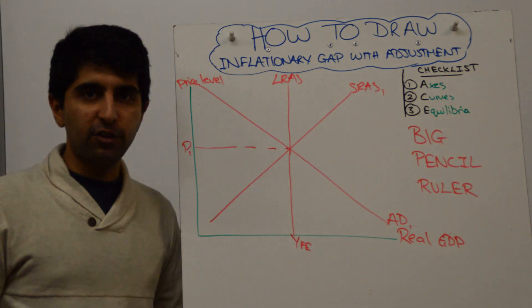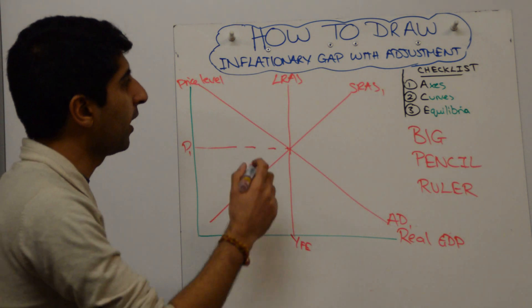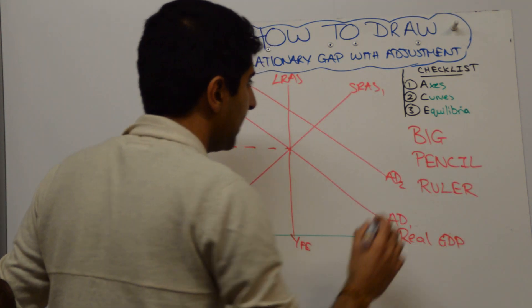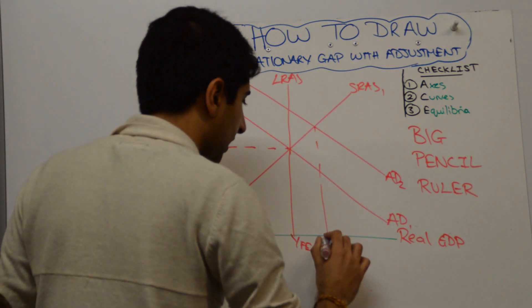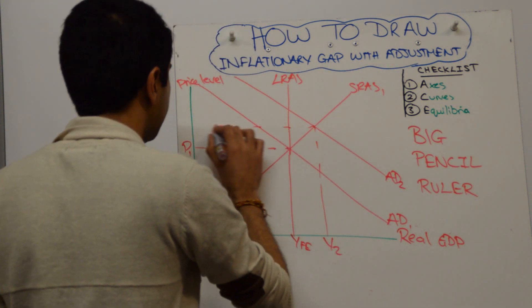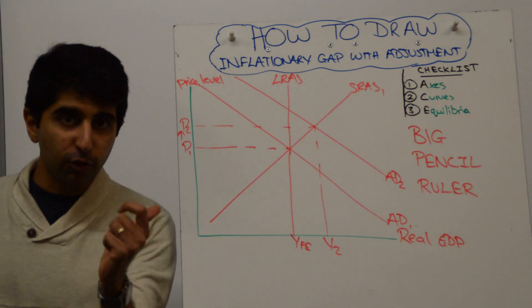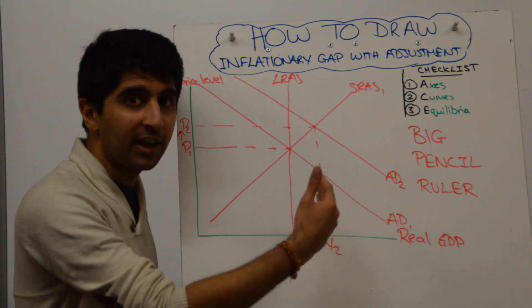We then need to show the inflationary gap, so shift AD to the right to show this inflationary gap from AD1 to AD2 with a new equilibrium, Y2, and higher inflationary pressure from P1 to P2. That's your inflationary gap. Lovely. So, we're doing it with a shift here.